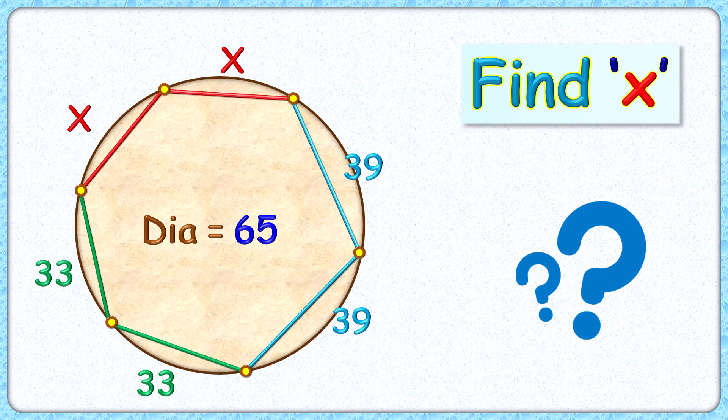This interesting question given to us is a circle with diameter 65 centimeters and a cyclic hexagon. The exciting part is with these given dimensions we have to find the value of x.